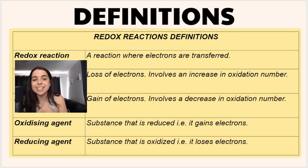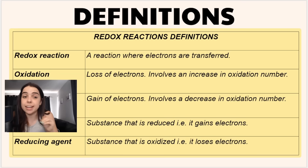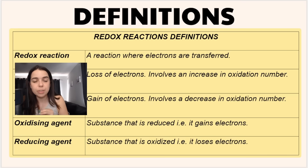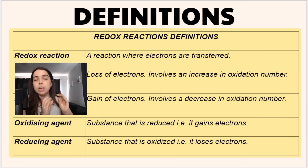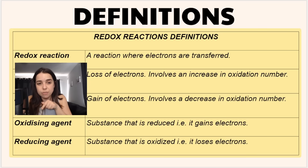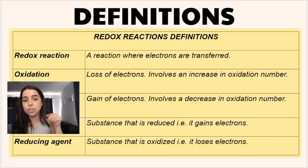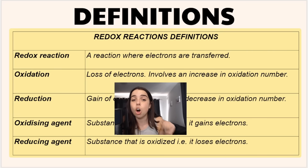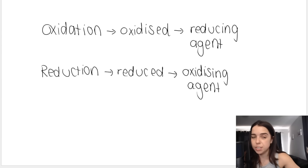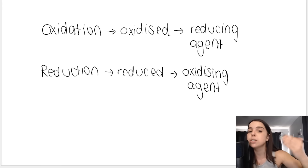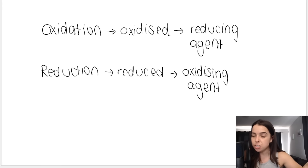We also have the terms oxidizing agent and reducing agent. Here's how I always teach it: if you are oxidized, you are the reducing agent; if you are reduced, you are the oxidizing agent — think opposites go together. So the oxidizing agent is the substance that is reduced, and the reducing agent is the substance that is oxidized. These terms need to go together in your brain.